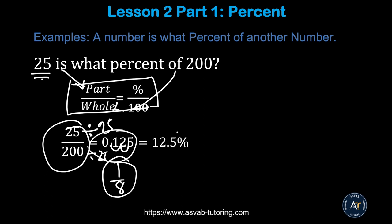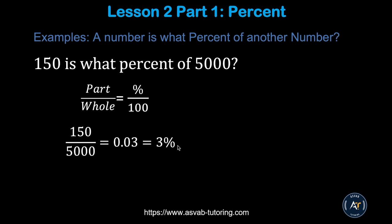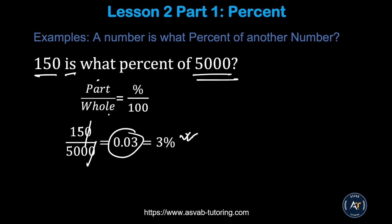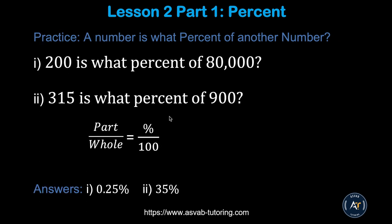Another problem: 150 is what percent of 500? 'Is' means part, 'of' means whole — so 150 over 500. Reduce that and you get 0.03. Convert that decimal to percent and you get 3 percent.